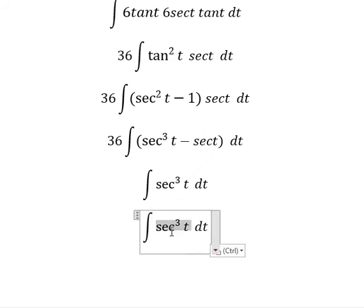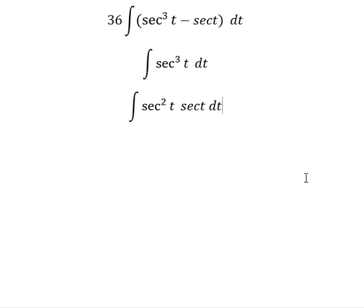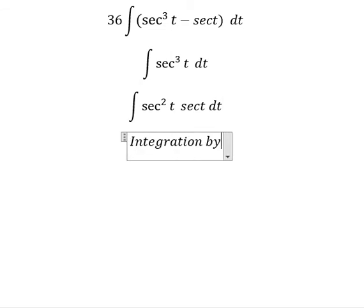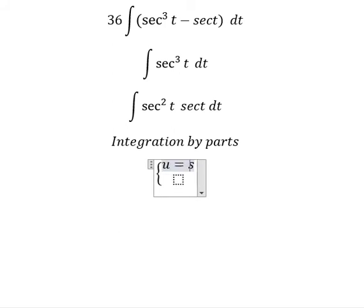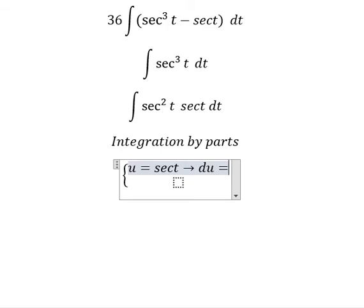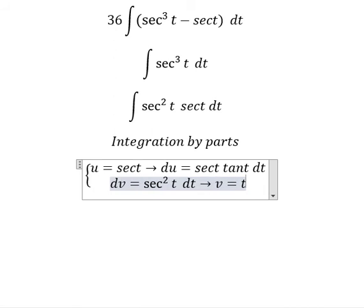We know that secant of t to the power of 3 is secant squared of t multiplied by secant of t. So we can use integration by parts. We set u equal to sec of t, and take the first derivative of both sides. For dv, we have sec squared of t dt. So the integral of dv gives us v equals tan t.